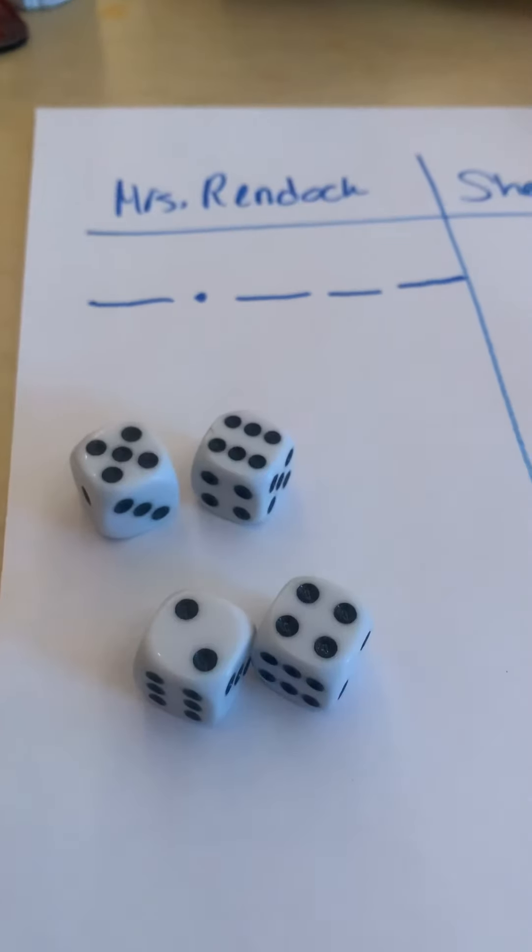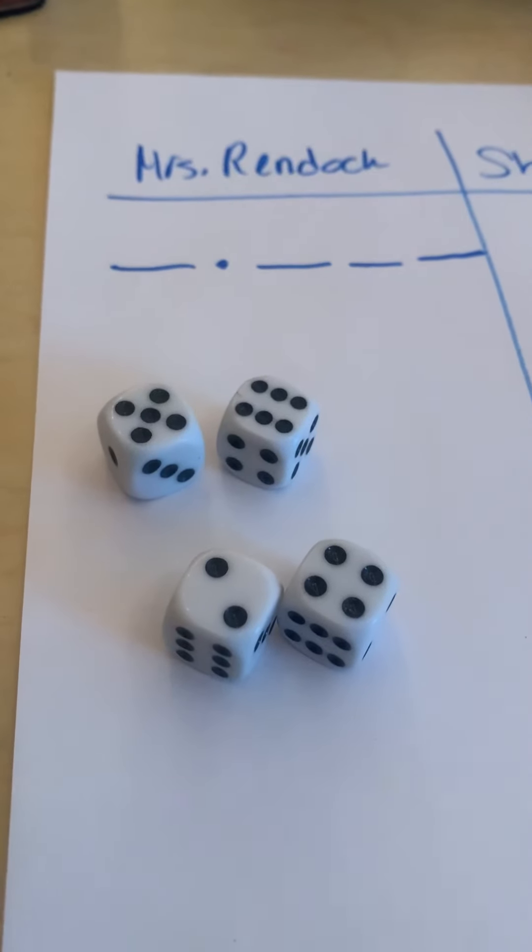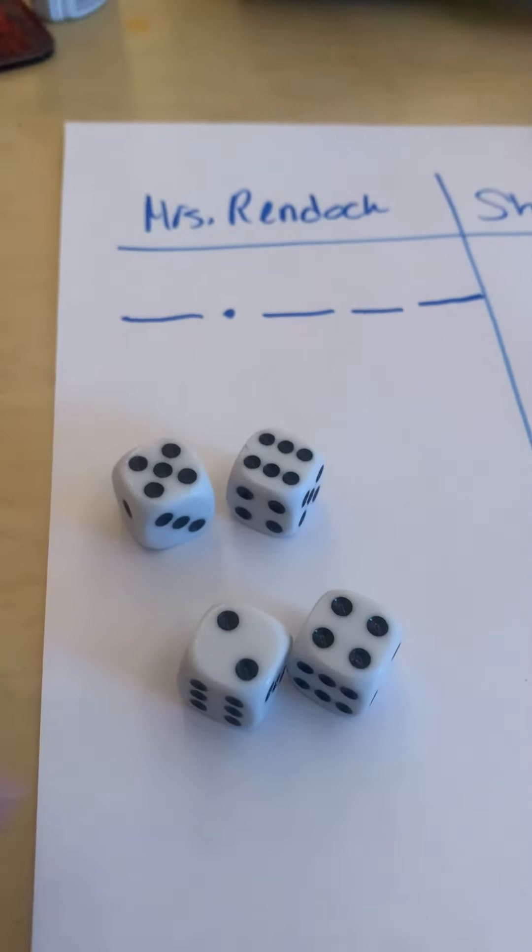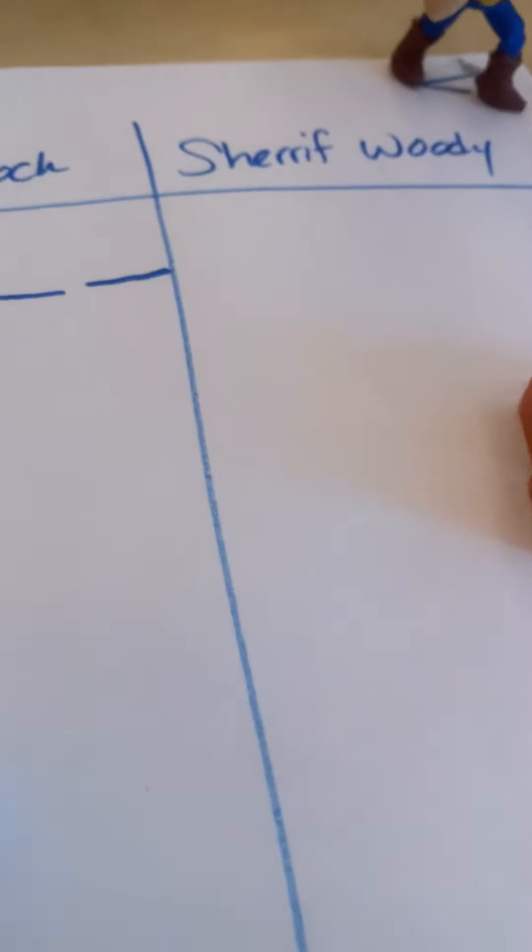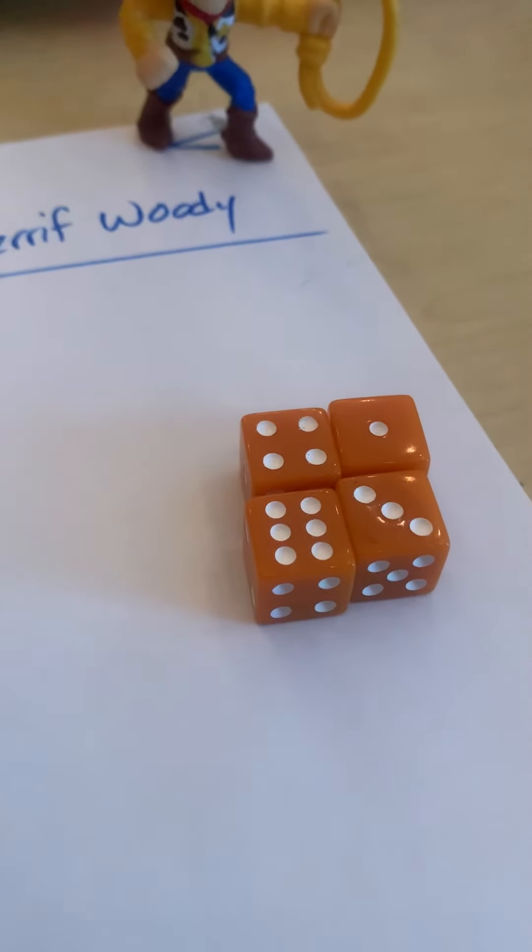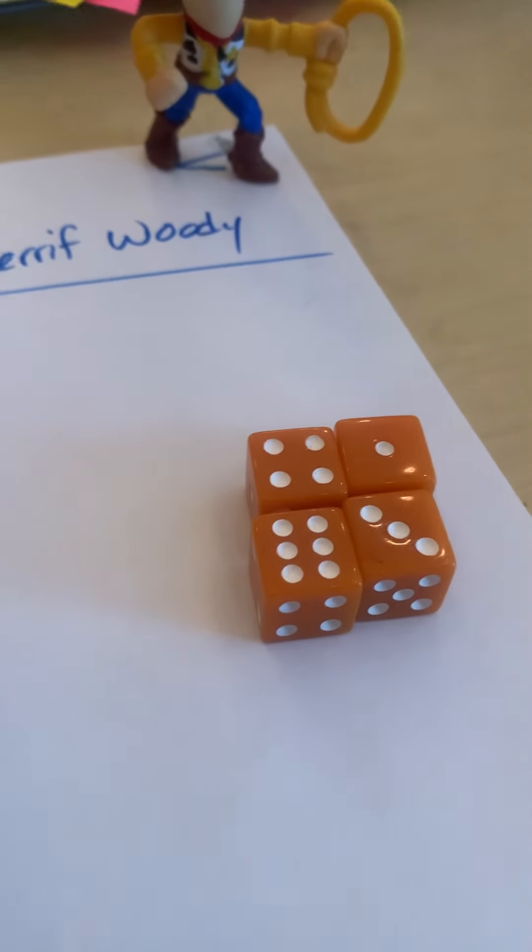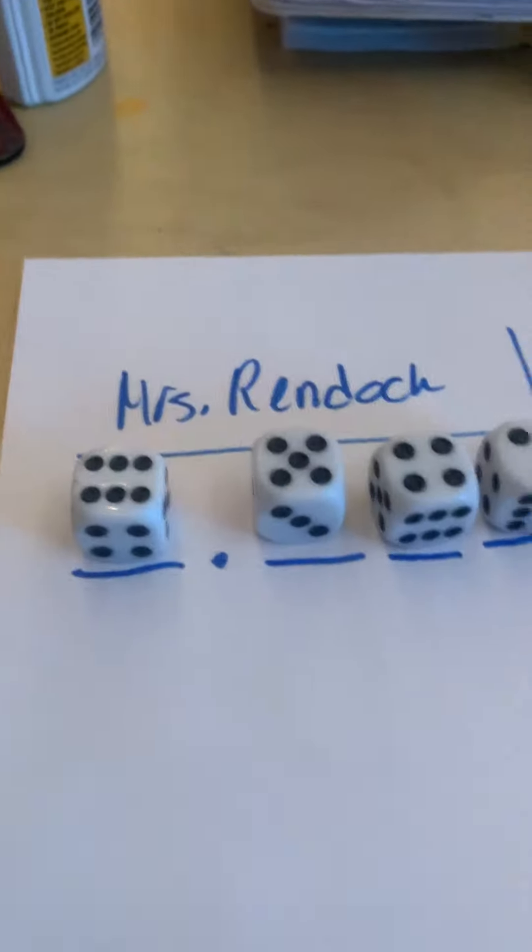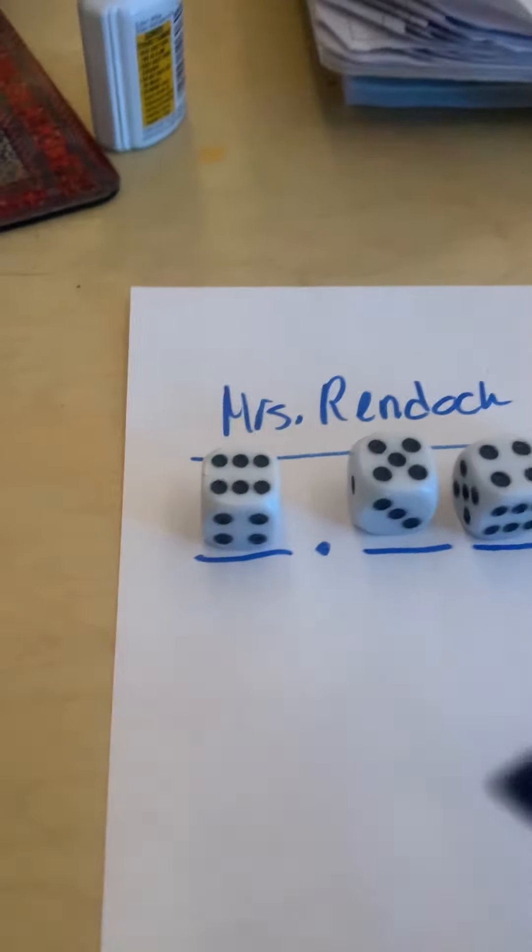So if I look at the dice that I have, in order to make the largest number possible, let's see, I would want the whole number to be the largest, so I'm going to put the six right there. And then I'm going to want the tenths to be the largest, with the hundredths the next largest, and then I have the thousandths being the smallest.